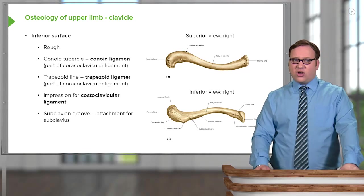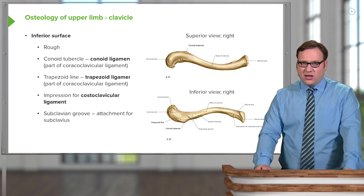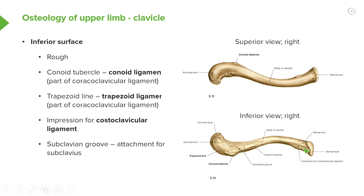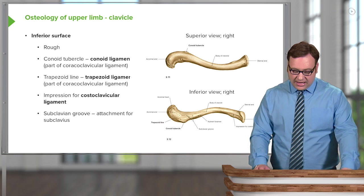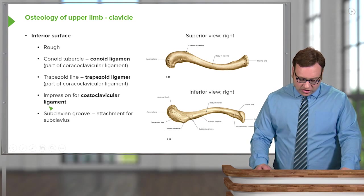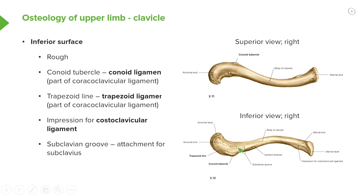The trapezoid ligament is also part of the coracoclavicular ligament, important in helping to stabilise the shoulder joint. We also have an impression for the costoclavicular ligament, located by the sternal end of the clavicle. As its name suggests, the costoclavicular ligament attaches to the ribs and is important in the sternoclavicular joint. We also have a subclavian groove, which is important for attachment of the subclavius muscle — a small muscle that runs on the underside of the clavicle.